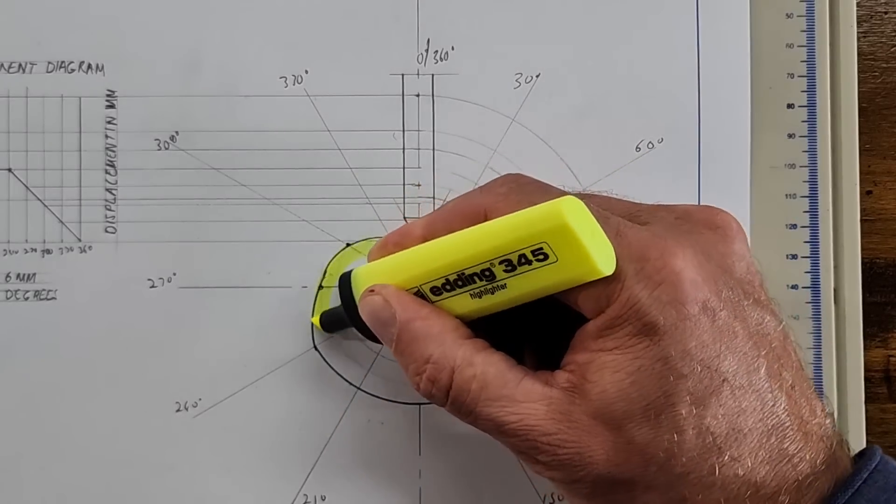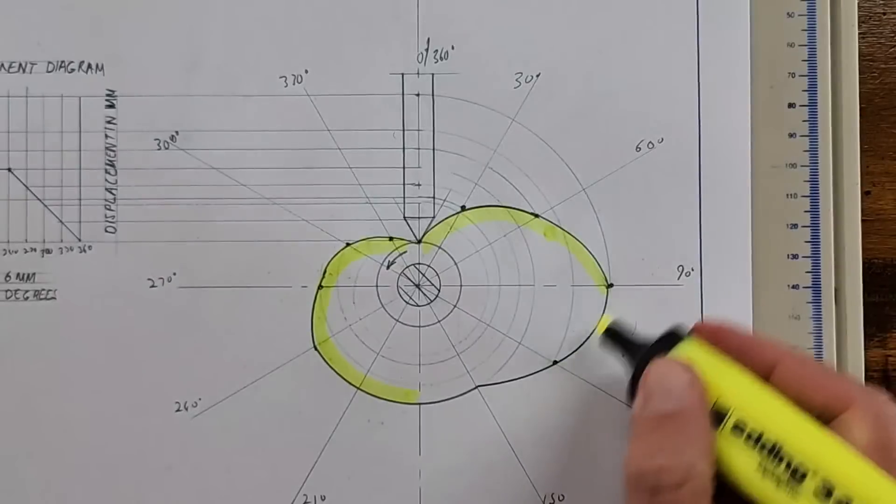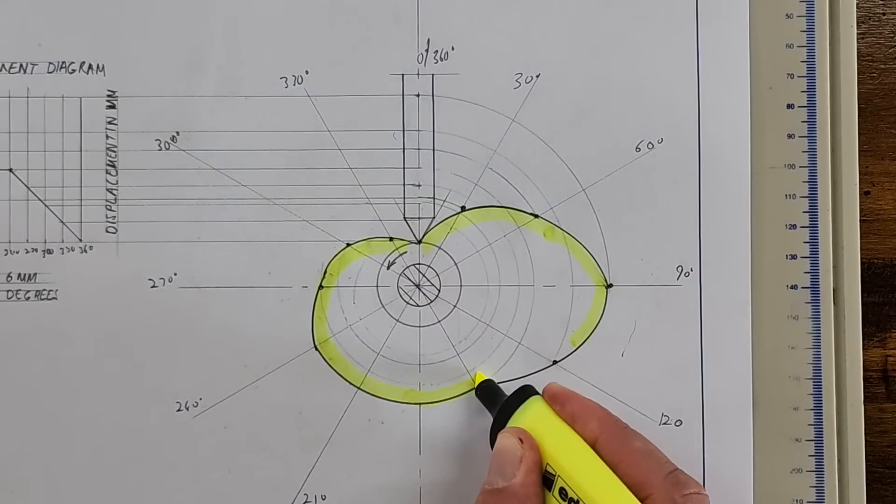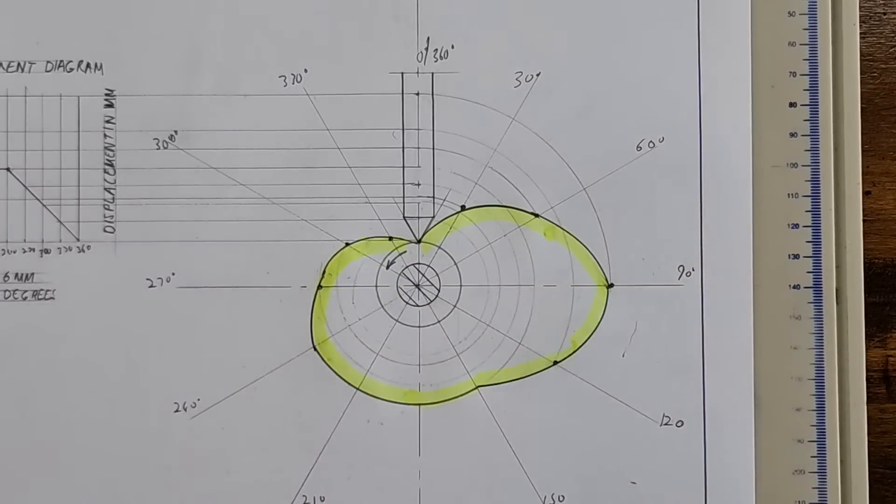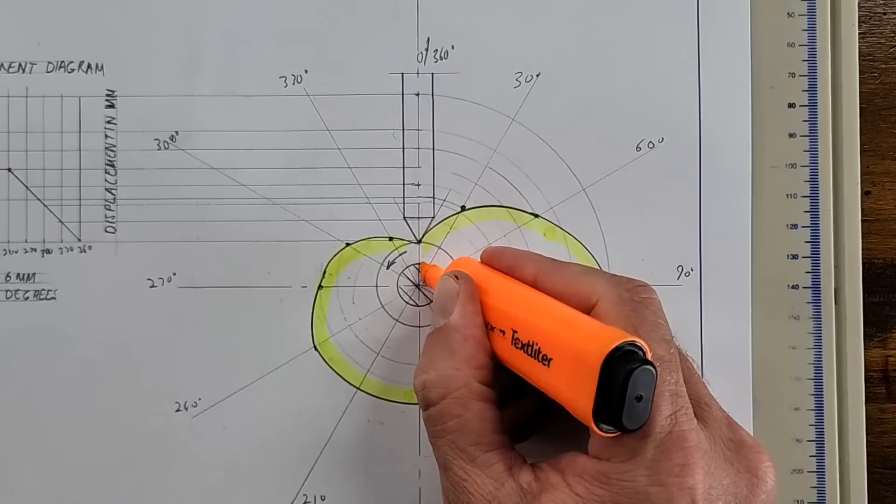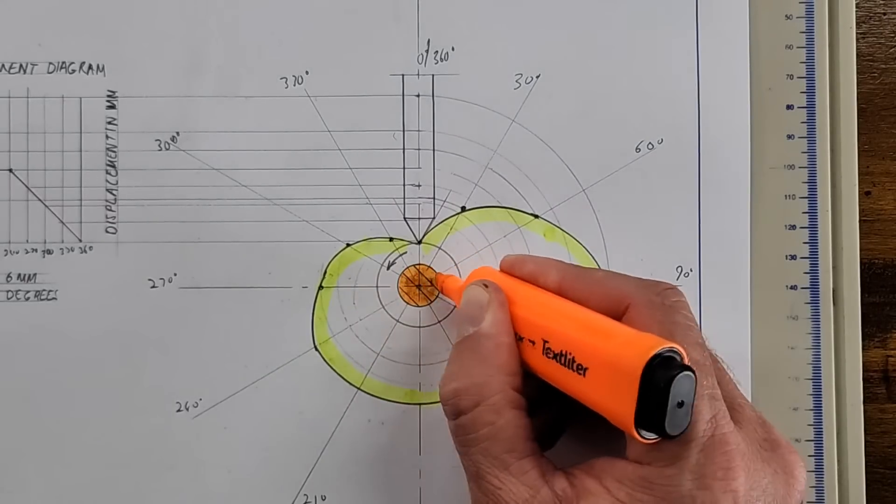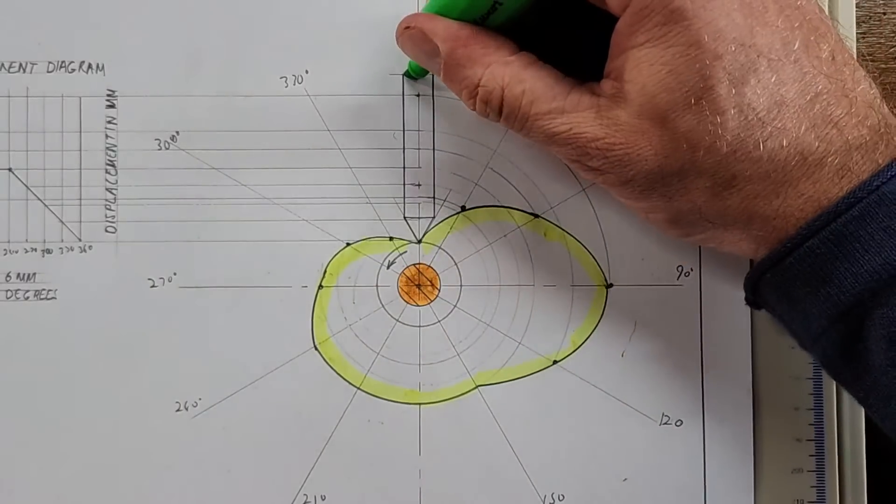You're going to get marks for how smooth - you're going to get a mark for getting the points at the correct spots and you're also getting another half a mark for every curve that is drawn to a neat and clean quality. Lots of marks up for grabs. This is about 30 to 40 marks in the exams. Here's our follower.